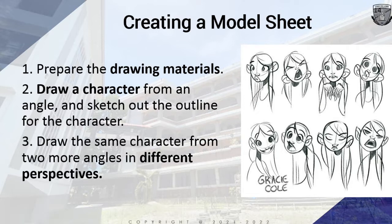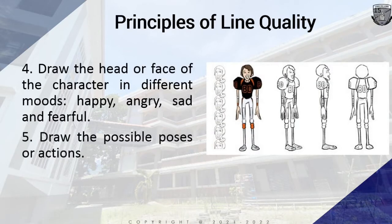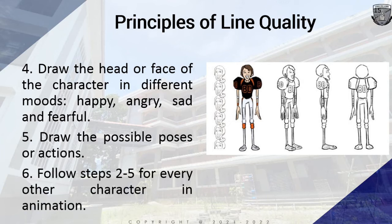Number three: draw the same character from two more angles in different perspectives — create the side view, front view, and three-fourth view. Number four: draw the head or face of the character in different moods. The four basic moods are happy, angry, sad, and fearful. Number five: draw the possible poses of the character's actions. Follow steps two to five for every other character in the animation to ensure quality and consistency. Model sheets must be used for all main characters in animation.